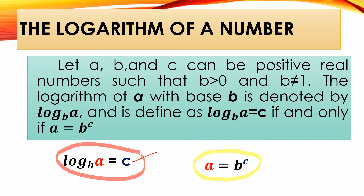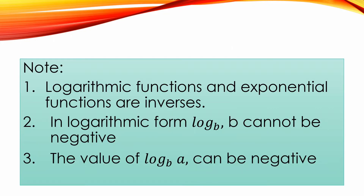Here, c is your exponent in the exponential form. Your a will be the equivalent value, and this is your base. Note that the logarithmic function and exponential functions are inverses. In logarithmic form, the base b cannot be negative — always remember, the base cannot be negative. However, the value of the logarithm, a with base b, can be negative. So the value of our logarithm can be a negative number, but the base cannot be negative.